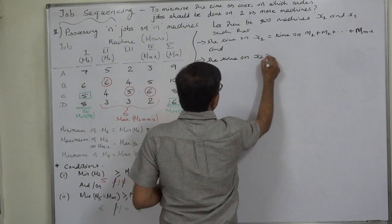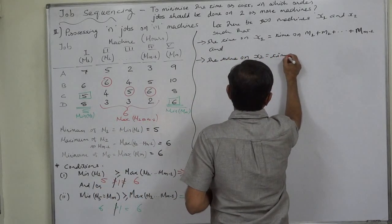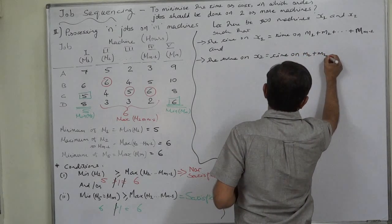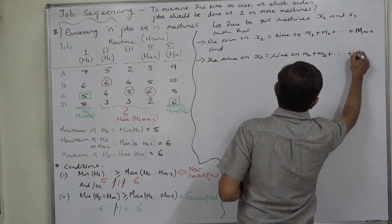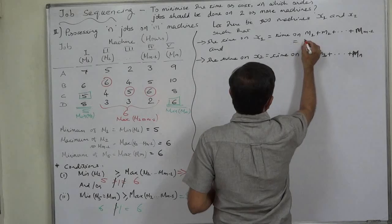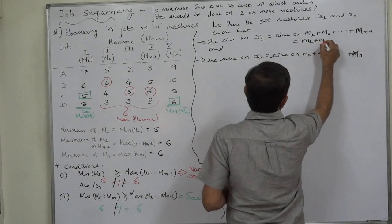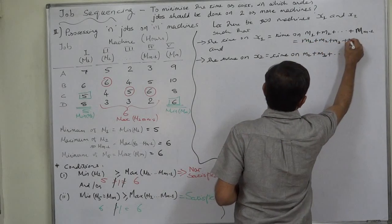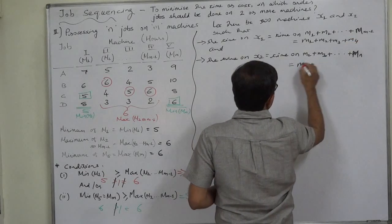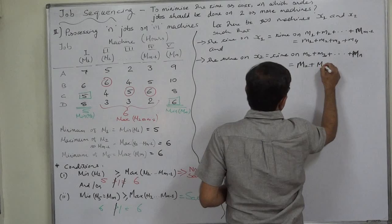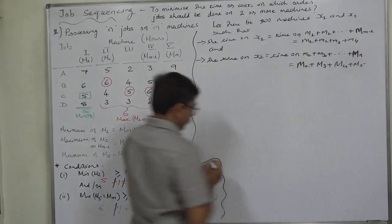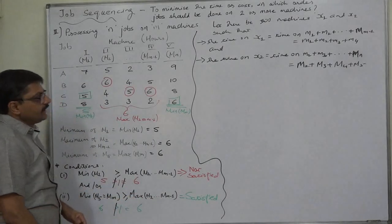And the time on X2 equals the sum of times on M2 + M3 + ... + Mm, that is, all machines except the first. In this five-machine case, X1 = M1 + M2 + M3 + M4 and X2 = M2 + M3 + M4 + M5.